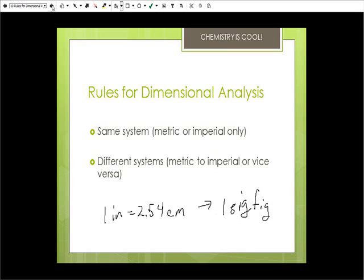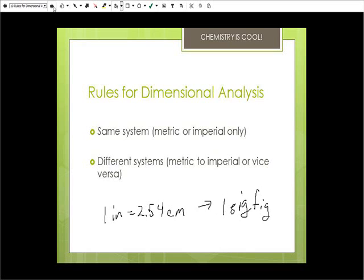Okay, for the last part of part one of this lecture, I'm going to show you one practice question. So this is a conversion from imperial to metric and vice versa. A race is 10 kilometers long. How far is this in miles? And I've given you two conversion factors: 1 mile equals 1,760 yards, and 1 meter equals 1.094 yards. So we start with what we know, which is the 10.0 kilometers. So we'll write that out.